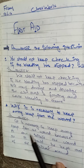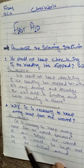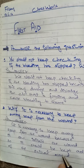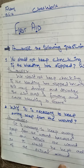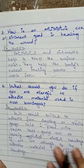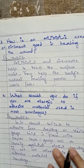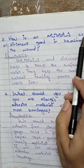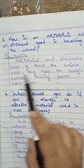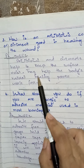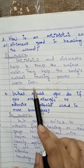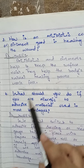It is necessary to keep away from the wound because it can irritate the wound, so it should be kept out. Question number three: How is an antibiotic cream or ointment good in healing the wound? Antibiotic cream or ointment helps to keep the surface moist.